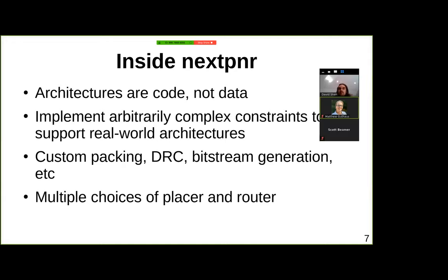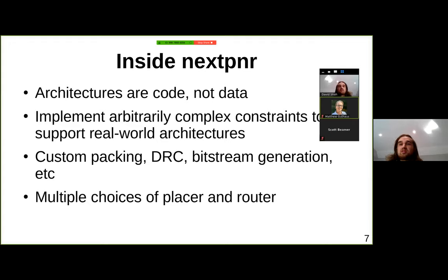One of the big things about NextPNR compared to previous open source place and route tools is that everything is based around the concept that an architecture is a series of source code files — it's an imperative rather than declarative architecture format. This makes implementing arbitrarily complex constraints much easier. Real world FPGAs often have quite strict rules on placement and routing that are very hard to capture in a fully declarative way, and you often need custom code for things like global clock network routing.